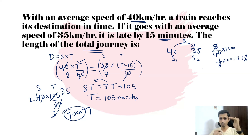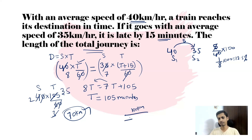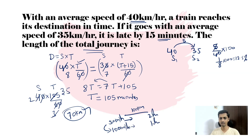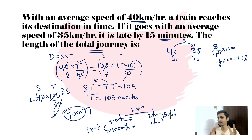If speed decreases, time will increase — they are inversely related. For example, consider a journey of 100 km at 50 km/h: it takes 2 hours. If I increase my speed by 100% to 100 km/h, I cover the same distance in 1 hour. Time decreased from 2 to 1, which is a decrease of 50%. So a 100% increase in speed causes a 50% decrease in time.